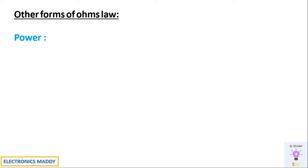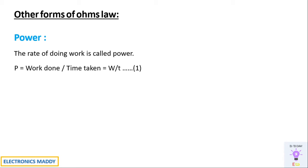The next thing is what are the other forms of Ohm's Law, now that we know V is equal to IR. We are going to define something called power. Everything with respect to electricity is talked about in terms of power — it is represented in every form, like energy consumption in watts. Power is the rate of doing work. We define it in terms of the equation P is equal to work done divided by time taken, so P is equal to W by T.